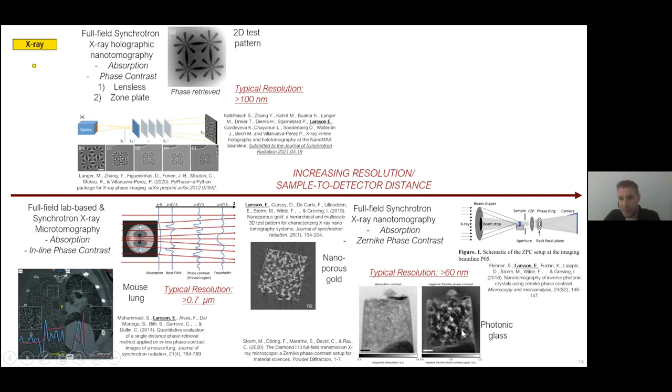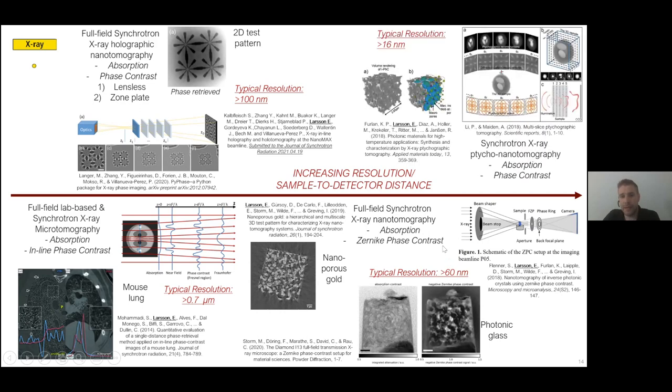Ultimately, there's ptychography where your source is very small and you have to scan it over the sample. You acquire the diffraction pattern that you then overlap, transform back to Fourier space, and eventually obtain projection images that you back-project to reconstruct the 3D object. For this project, we aim to use all of these imaging techniques to have this correlative approach on different fields of view and resolutions of these membrane samples.